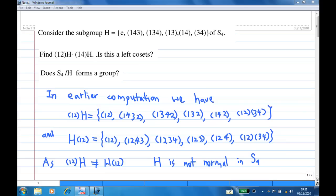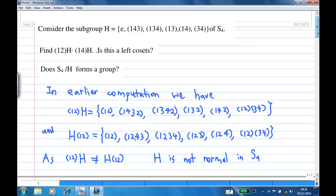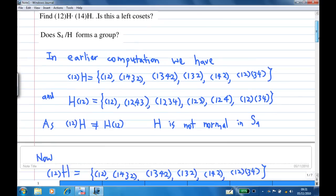And the right coset H(12) consists of (12), (1243), (1234), (123), (124), (1234). Now we find that the left coset and right coset are not equal, so H is not normal in S4.